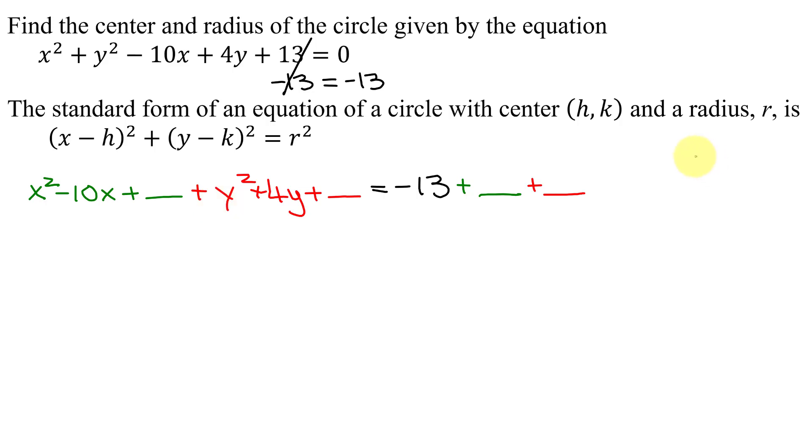Working on the x's, you take the coefficient of the linear term, the x term, which is negative 10. You divide it by 2, which gives you negative 5. Then you take negative 5 and square it. Negative 5 squared is positive 25. The squared term is the number that you add to both sides of this equation.